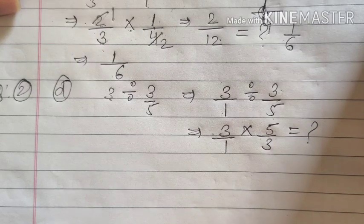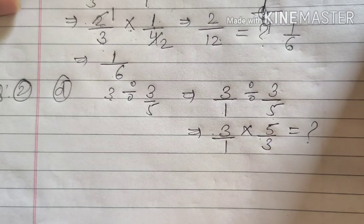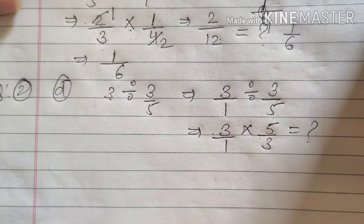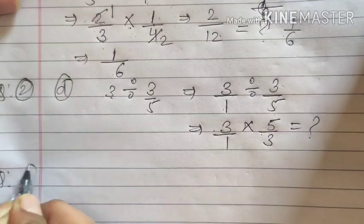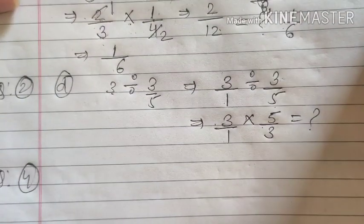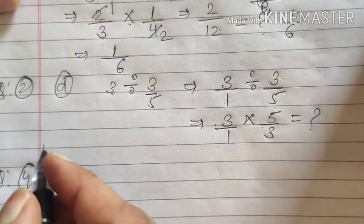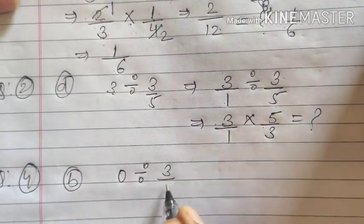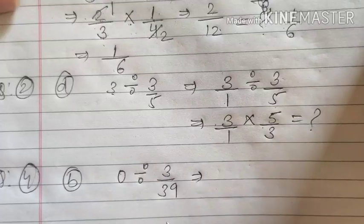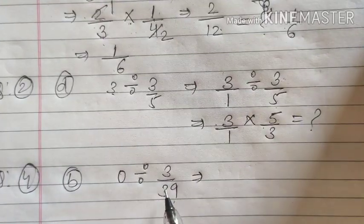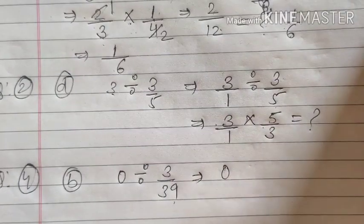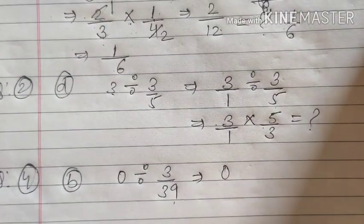Question number 4. Nothing is special. Divisions are given. And some numbers are given. For example, I can solve question number 4. Let it be. Rest of the parts you will solve by yourself. I can solve B part. 0 divided by 3 upon 39. In the properties of the division, we have learned that if 0 is divided by any number, then the final answer will be 0. This is direct answer.